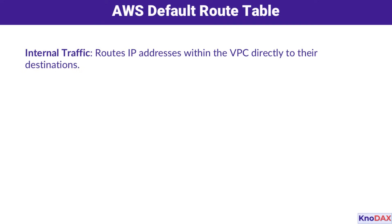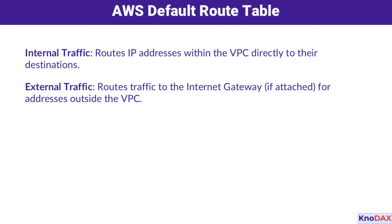AWS gives every VPC a default route table. It routes traffic within the VPC directly and handles external traffic through an internet gateway, if one is attached. This default setup simplifies initial configurations while giving you the flexibility to customize as needed.